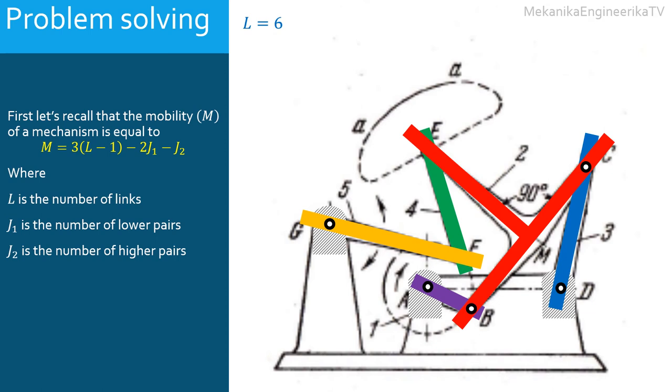Finally, the binary link 4 is connected to link 2 using a pin joint in E, and is connected to link 5 using a pin joint in F. In all there are 7 rotating kinematic pairs in A, B, C, D, E, F, and G. Hence, J1 is equal to 7. In this example there is no cam or gear kinematic pairs. Thus, J2 is equal to 0.